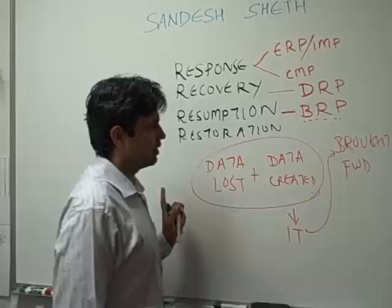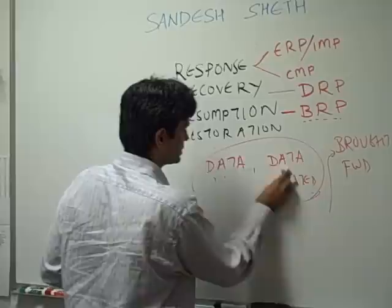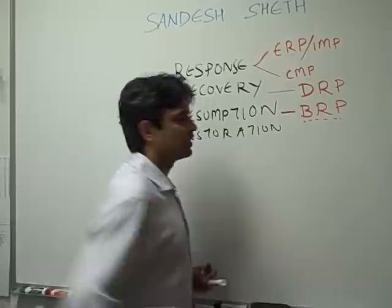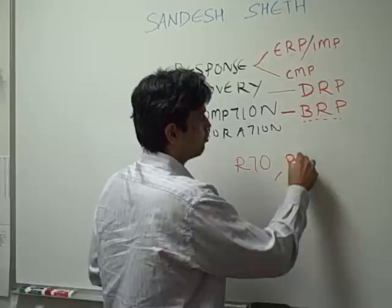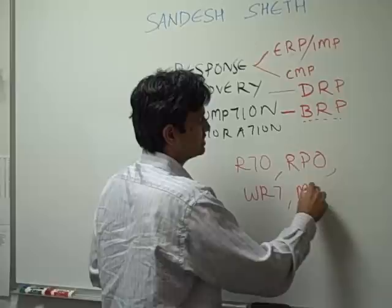There are abbreviations associated with all of this: the RTO (recovery time objective), the RPO (recovery point objective), the work recovery time, and the maximum tolerable downtime. I will cover all of these in the next webcast.